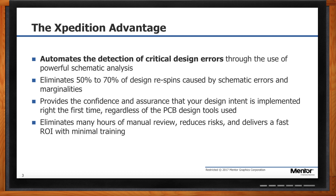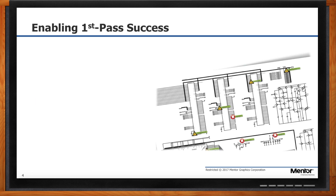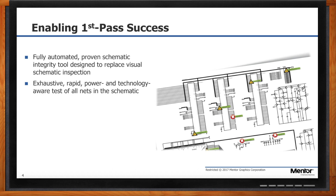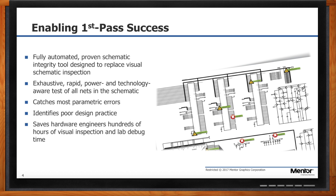It can eliminate hours and hours of manually reviewing schematics, reducing your risk and helping ensure you're getting a quality product to market as quickly as possible. With Expedition Schematic Integrity Analysis, we have a fully automated, proven schematic integrity tool designed to replace your visual schematic inspection process. It has exhaustive, rapid, power- and technology-aware tests that it performs on all nets in the schematic — not just the most complicated portions. It can even identify poor design practice with some of the built-in checks.